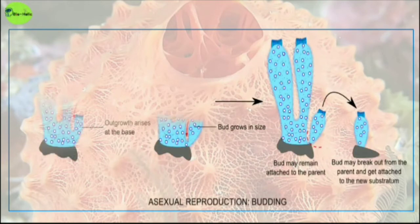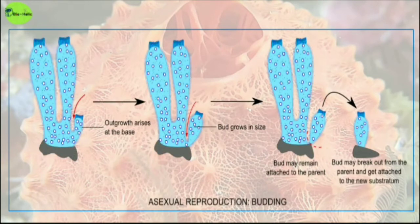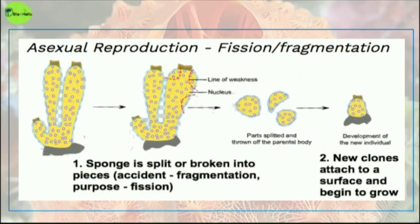Here are some images of asexual reproduction in sponges. You can see that an outgrowth arises at the base of the sponge's body, which forms the bud. The bud falls off and breaks away from the parent and attaches to a new substratum, forming a new sponge. In fragmentation, the sponge is broken into fragments, which in turn form new clones, attach to a surface, and begin to grow into new sponges.